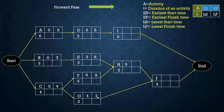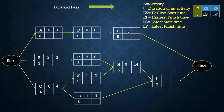For activity H, it needs input from both E and F, so it must wait until both are complete. The earliest start time of H is the maximum of the earliest finish times of E and F, which are 6 and 9 — the maximum is 9. The earliest finish time of H is 9 plus 5, which is 14. For activity I, it needs input from D, so its earliest start time is 8, and the earliest finish time is 8 plus 5, which is 13.